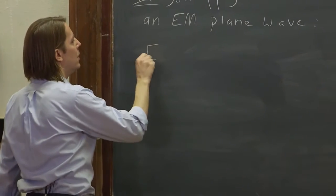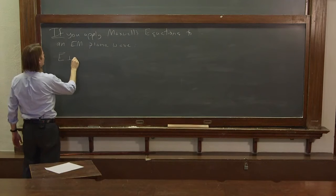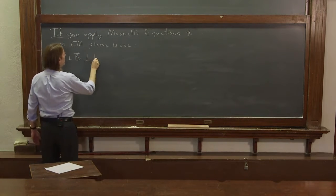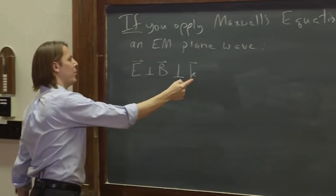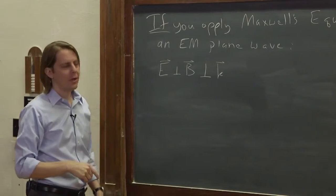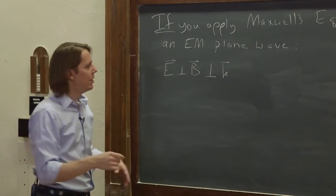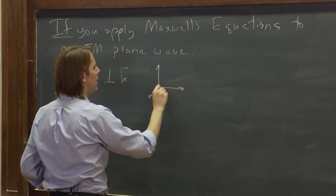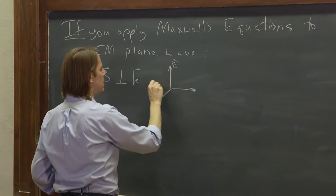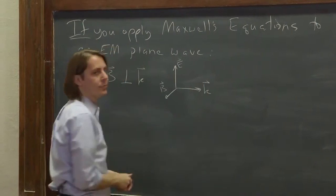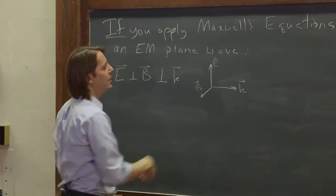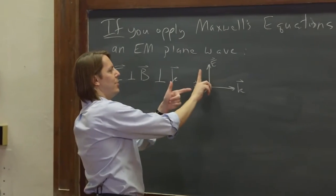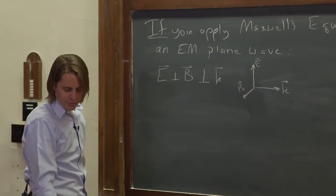One thing you learn is that the E field is always perpendicular to the B field, which is always perpendicular to the wave vector. And going around, the wave vector is perpendicular to the E field. So the three of them are all perpendicular to each other. And it works out such that E cross B is in the direction of K — right-hand rule, E cross B goes along K. So the wave propagates along K with E and B perpendicular in the transverse direction.